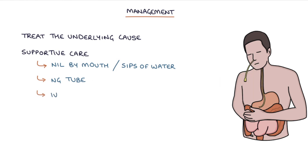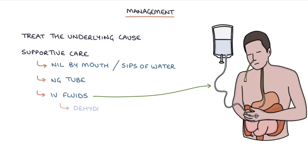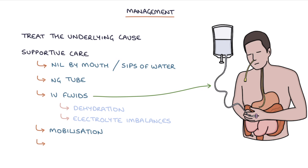Providing IV fluids to prevent dehydration and correct any electrolyte imbalances, mobilising the patient which can help stimulate peristalsis, and if there's a long wait before the bowel regains function, total parenteral nutrition or TPN may be required.